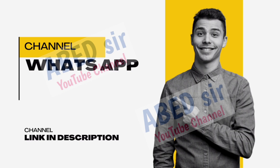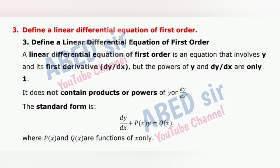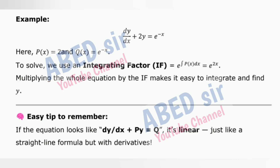Next important short question 3: Define a linear differential equation of first order. A linear differential equation of first order is an equation that involves y and its first derivative dy/dx, but the powers of y and dy/dx are only one. It does not contain products or powers of y or dy/dx. The standard form is dy/dx + P(x)·y = Q(x), where P(x) and Q(x) are functions of x only. Example: dy/dx + 2y = e^x. Here P(x) = 2 and Q(x) = e^x. To solve, we use an integrating factor IF = e^∫P(x)dx = e^(2x). Multiplying the whole equation by the IF makes it easy to integrate and find y.